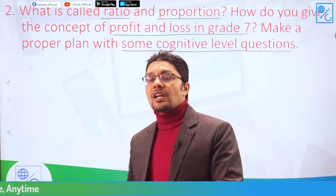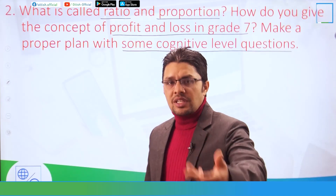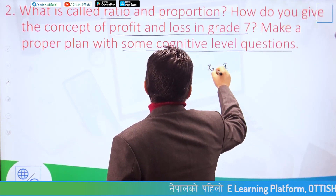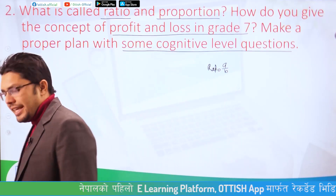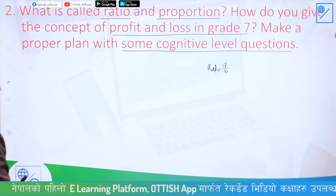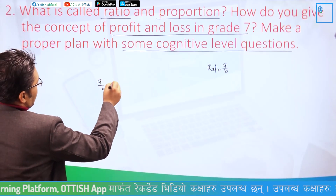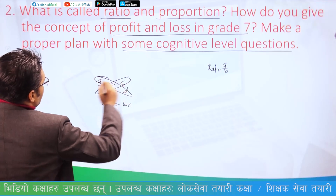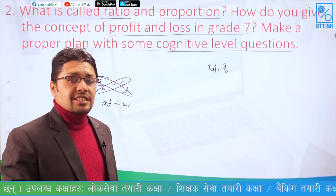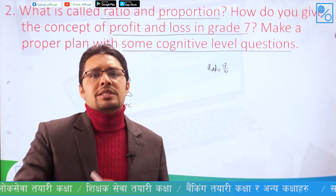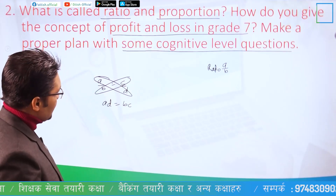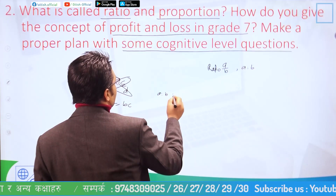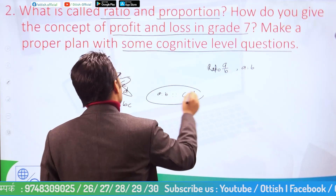Proportion is also a comparison of fractions. If a/b = c/d, then B and C are the means and A and D are the extremes. The ratio of A is to B as C is to D — this is proportional.